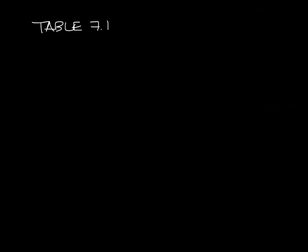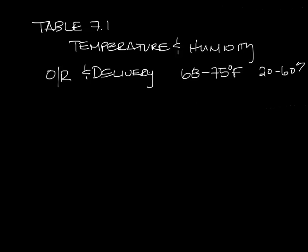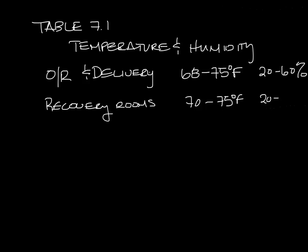Table 7.1 also shows the design temperature and relative humidity ranges for each type of space. For instance, operating rooms and delivery rooms are supposed to be 68 to 75 degrees and 20 to 60 percent relative humidity, whereas recovery rooms can be 70 to 75 degrees and 20 to 60 percent humidity.